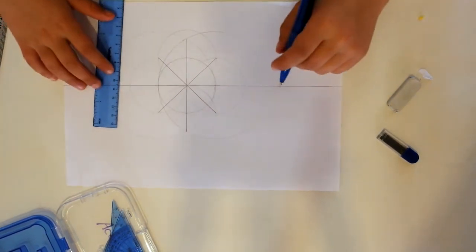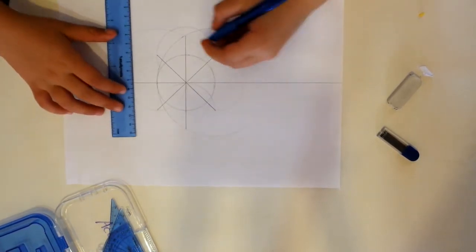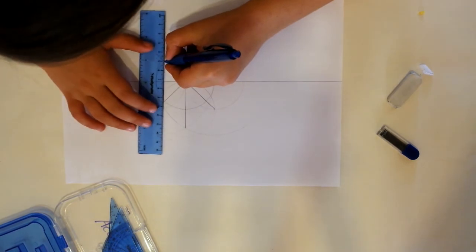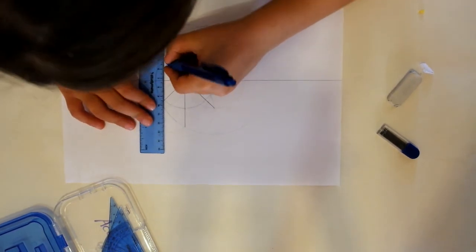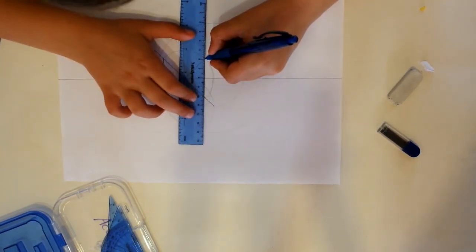So you've got now lots of dividing lines, so those 8, so that we know, like the 8-pointed star, but also the 8 like that looks like the union jack as well, doesn't it?